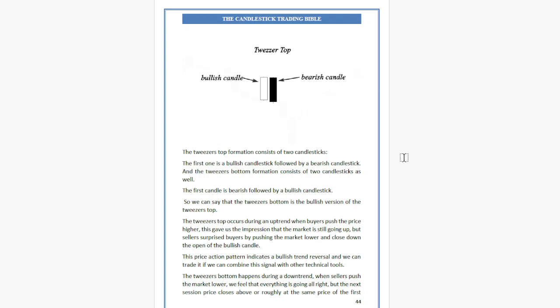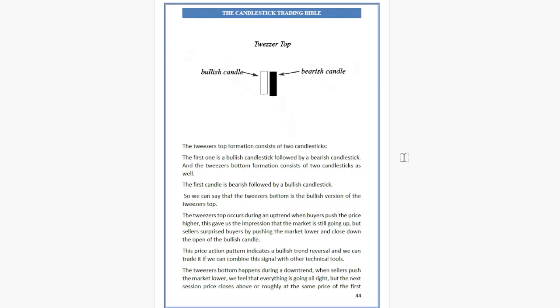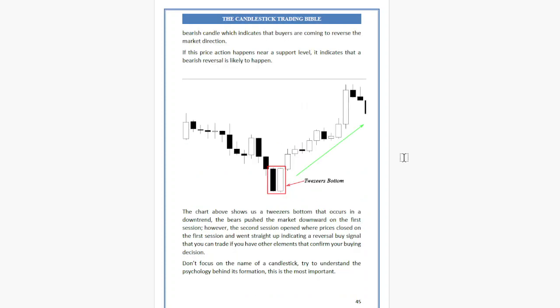The Tweezer Bottom happens during a downtrend. When sellers push the market low, we feel that everything is going in one direction. But the next session, price closes at roughly the same price as the first candlestick, indicating that buyers are coming to reverse the market direction. If this price action happens near a support level, it indicates that a bullish reversal is likely to happen.